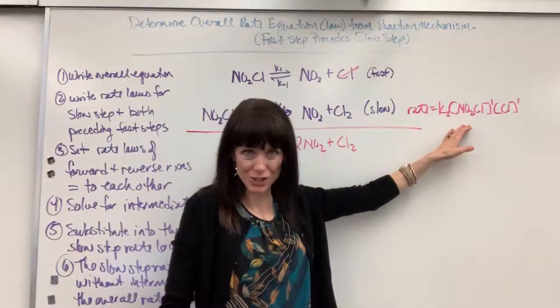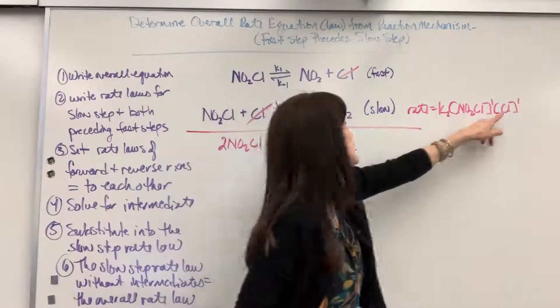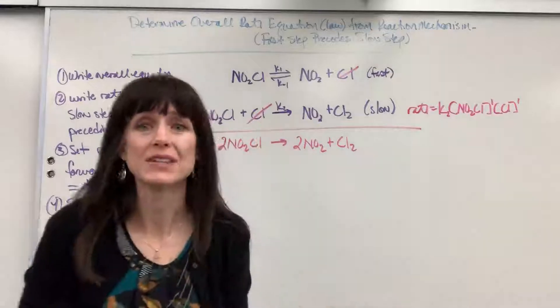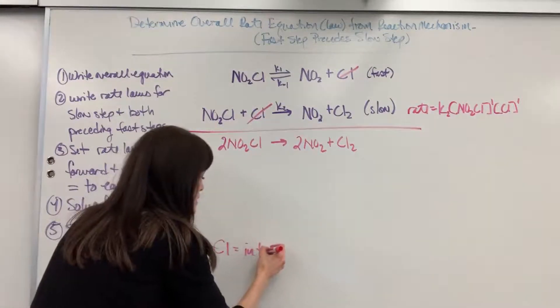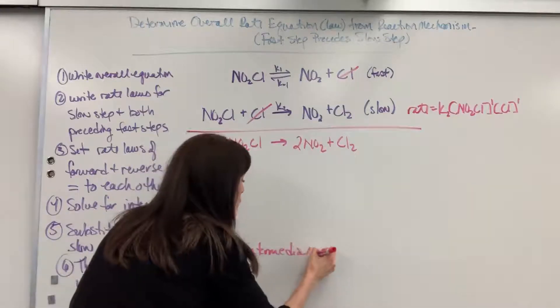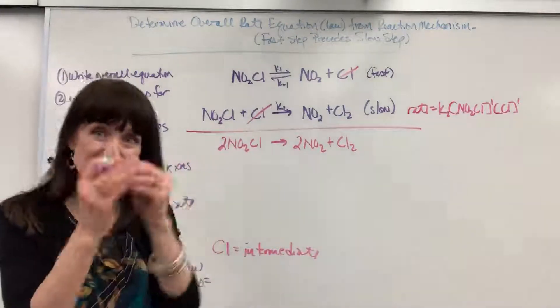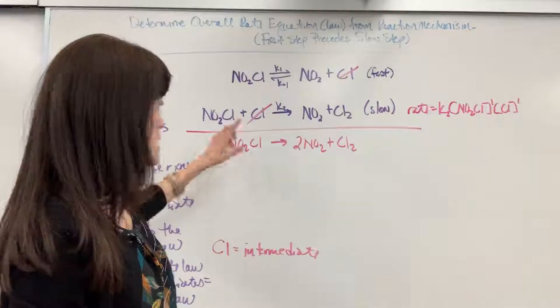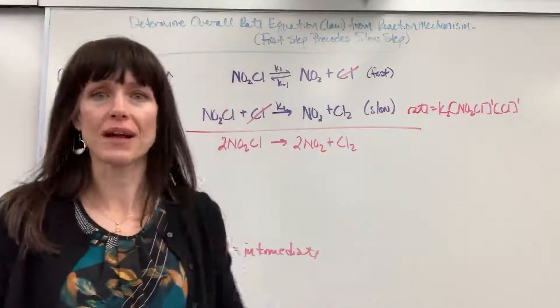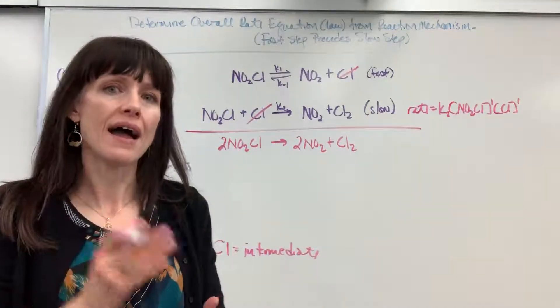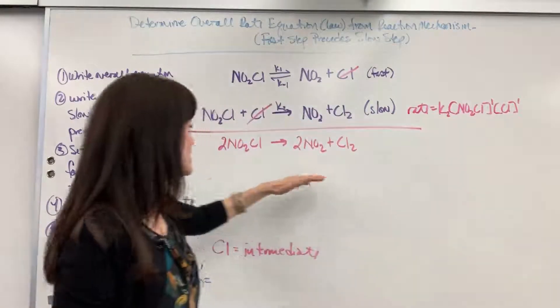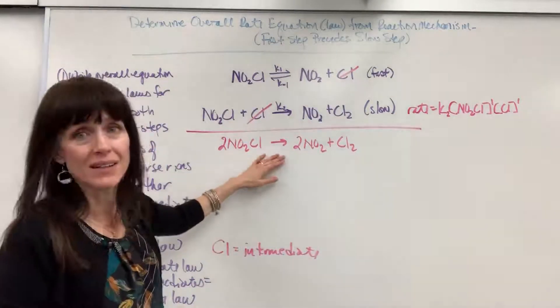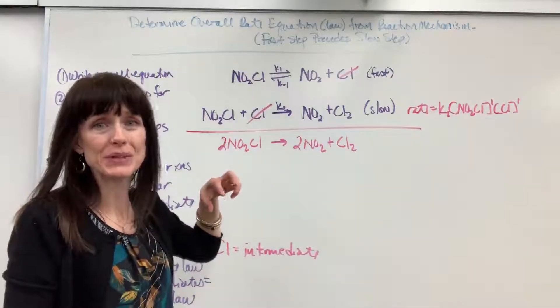I've got an issue. Notice that Cl, that's the intermediate. Cl is the intermediate. There's no chlorine, just a Cl species, anywhere in that reaction. You cannot have an intermediate in your rate law. You can only have species that are in the actual true chemical equation.